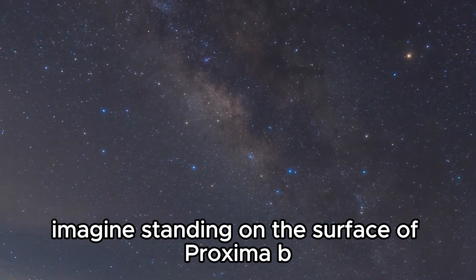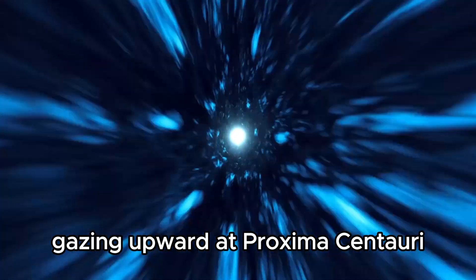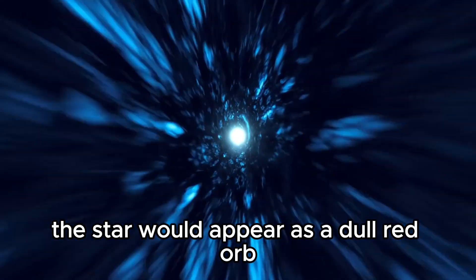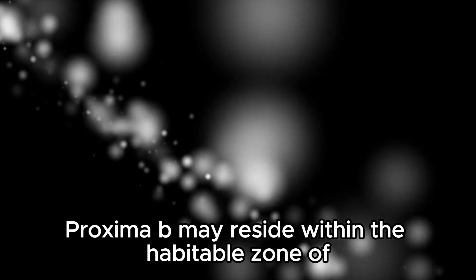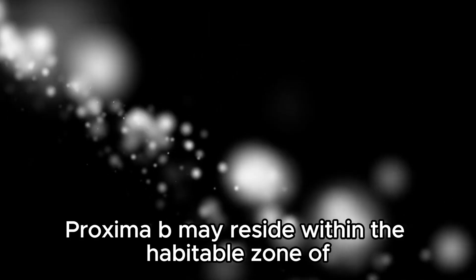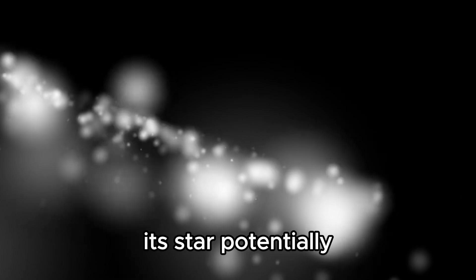Imagine standing on the surface of Proxima b, gazing upward at Proxima Centauri. The star would appear as a dull red orb about three times the size of our Sun. Remarkably, Proxima b may reside within the habitable zone of its star, potentially creating conditions conducive to liquid water.